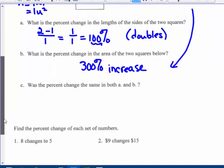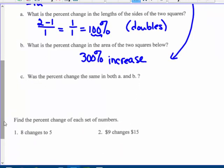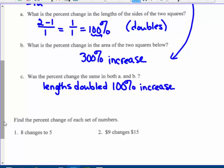Was the percent change the same in both A and B? No. The lengths doubled, was a 100% increase. And the area quadrupled, but that was a 300% change and also an increase. So they were not the same.